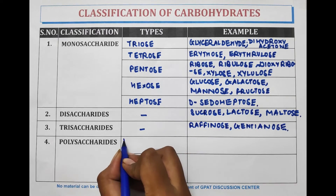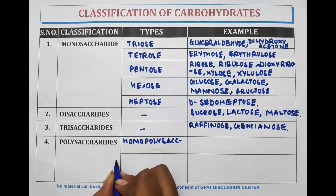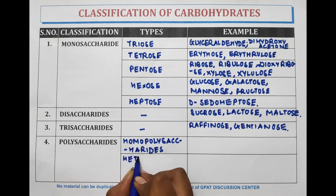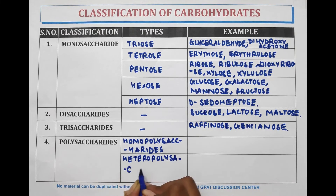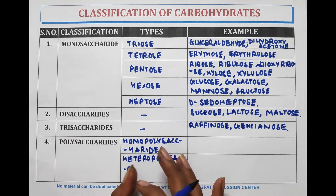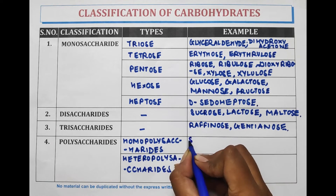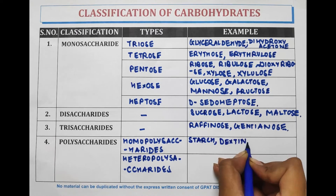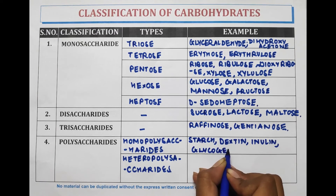Polysaccharide is divided into two subtypes: homo polysaccharide and hetero polysaccharide. Homo means same and hetero means different. In homo polysaccharides all units are the same. Examples of homo polysaccharide are starch, dextrin, inulin, glycogen, and cellulose.